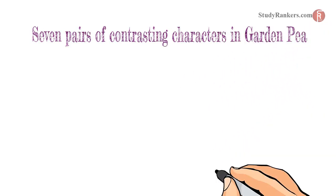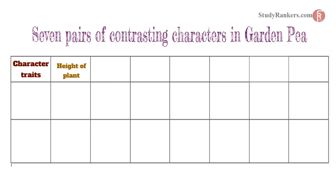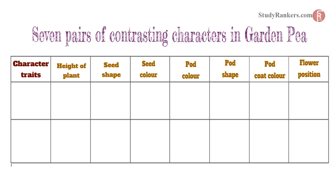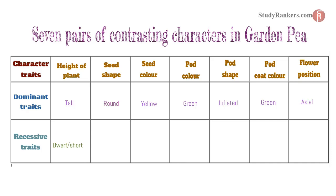Lastly, we will talk about the seven pairs of contrasting characters in garden pea. The contrasting character traits are: height of plant, seed shape, seed color, pod color, pod shape, pod coat color, and flower position. The dominant traits for these characters are: Tall, Round, Yellow, Green, Inflated, Green, and Axial respectively. While the recessive traits are: Dwarf or short, Wrinkled, Green, Yellow, Constricted, White, and Terminal, as shown in the chart.